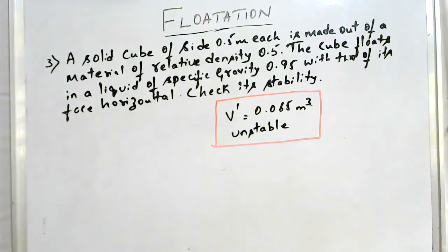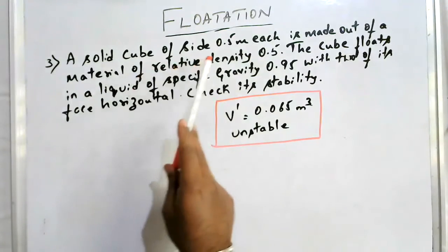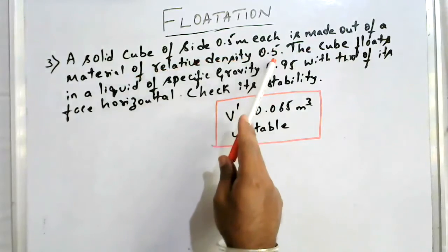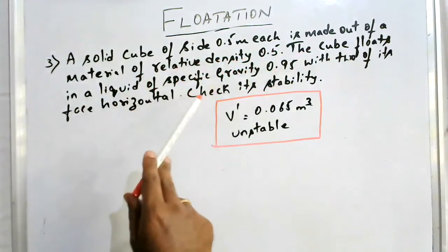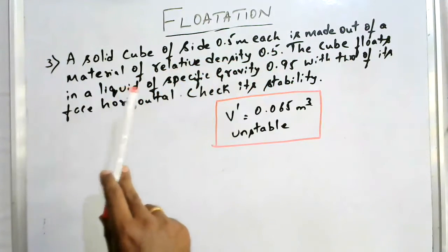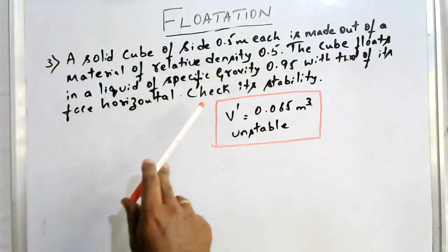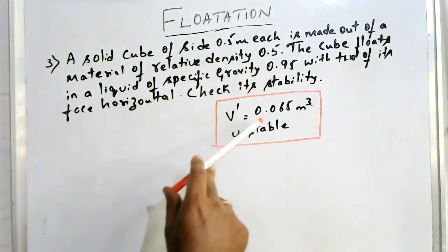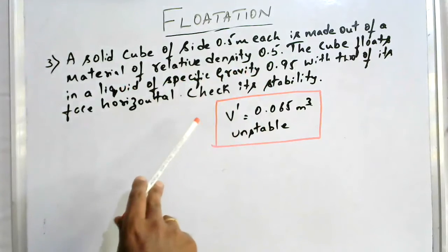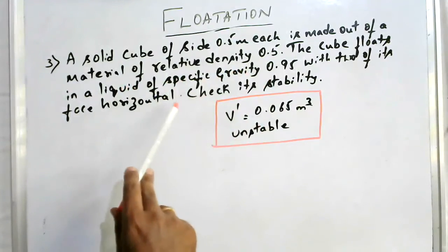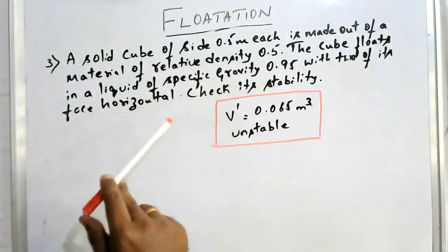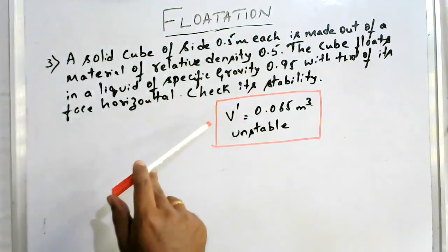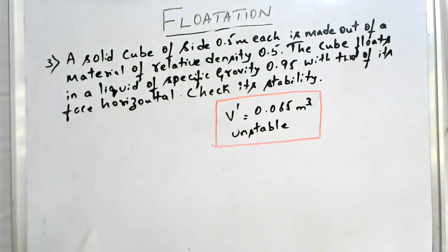Problem three is given as an assignment for you to work yourself. A solid cube of side 0.5 meter is made out of a material of relative density 0.5. The cube floats in a liquid of specific gravity 0.95 with two of its faces horizontal. Check its stability. To check stability, find the metacentric height — if positive it is stable, if negative it is unstable. The volume of immersed part V-dash works out to be 0.065 cubic meter and you will get the metacentric height as negative, indicating unstable equilibrium. Solve this and comment below with your answers. Kindly subscribe to the channel for notifications on new videos.